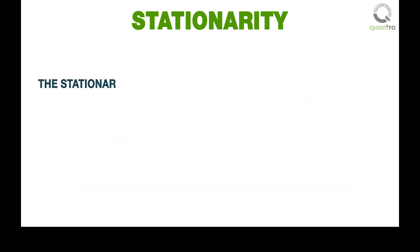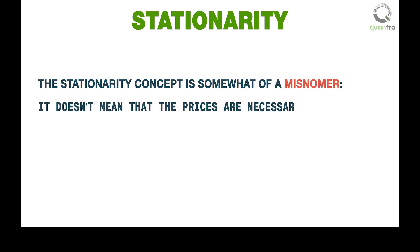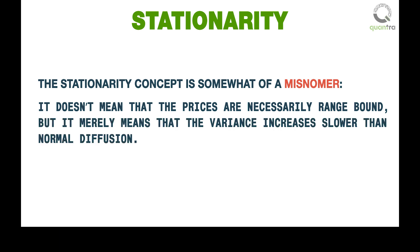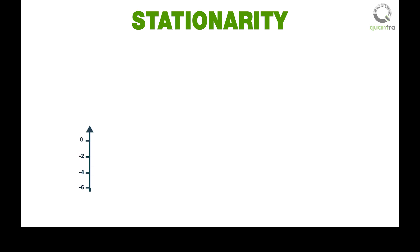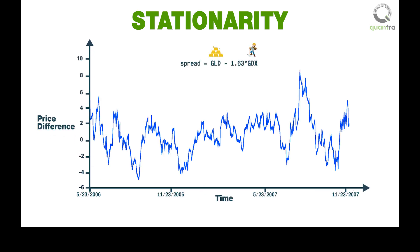The stationarity concept is somewhat of a misnomer. It doesn't mean that the prices are necessarily range bound, but it merely means that the variance increase is slower than normal diffusion. If the price or market value of an instrument is stationary, we can profit easily by a simple mean-reverting strategy: buy low and sell high.